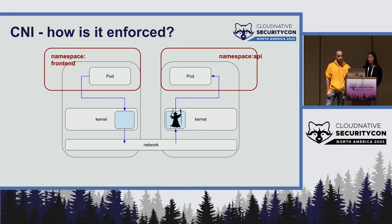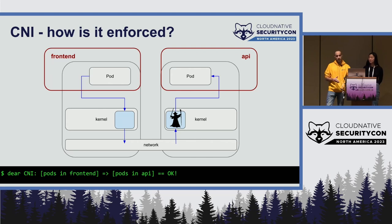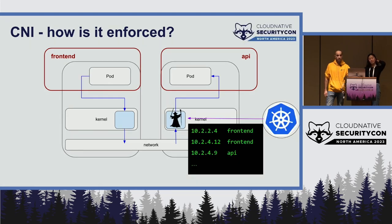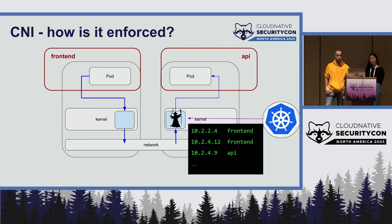In our basic setup, say the pod on the left is in a namespace called 'frontend' and the pod on the right is in a namespace called 'API.' A network policy says pods in the frontend namespace can connect to pods in the API namespace. IP tables and eBPF don't know anything about Kubernetes namespaces, so the CNI plugin implements a network policy controller that queries the Kubernetes API, tracks pods and namespaces, keeps track of IP addresses, and updates IP tables rules or eBPF maps accordingly.